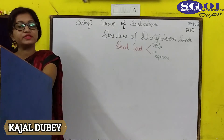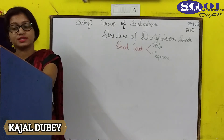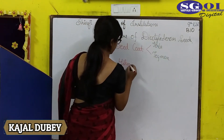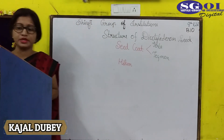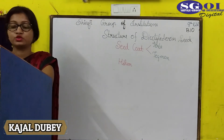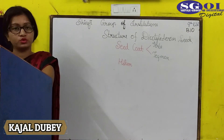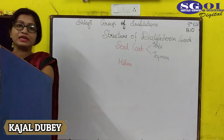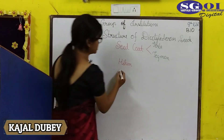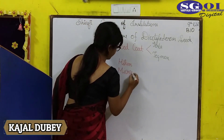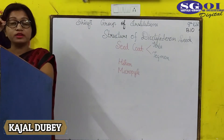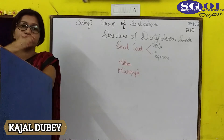On the concave side of the seed, there is a whitish oval scar which is called the hilum. The hilum is the point where the seed was attached to the pod with the help of the funicle, as discussed earlier. Close to the hilum at one end, there is a small opening known as the micropyle. This micropyle helps to absorb water during germination.